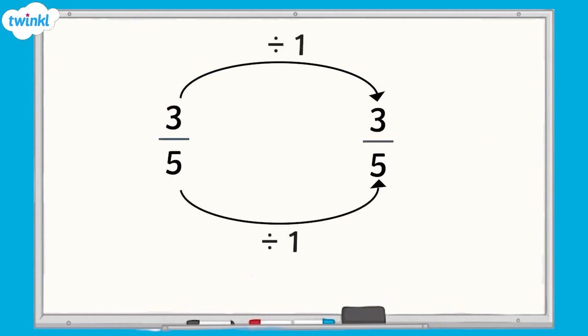If we divide the numerator and denominator by 1, the fraction stays the same. Therefore, if the only common factor of 2 or more numbers is 1, then the fraction is already in its simplest form and cannot be simplified any further.